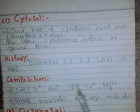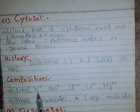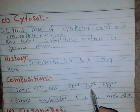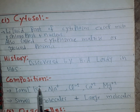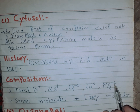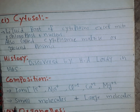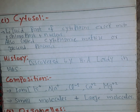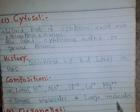The composition of cytosol: it contains ions such as potassium ions, sodium ions, chlorine ions, calcium ions, and magnesium ions. It also contains small molecules like amino acids, glucose, and large molecules like proteins, carbohydrates, lipids, and vitamins.